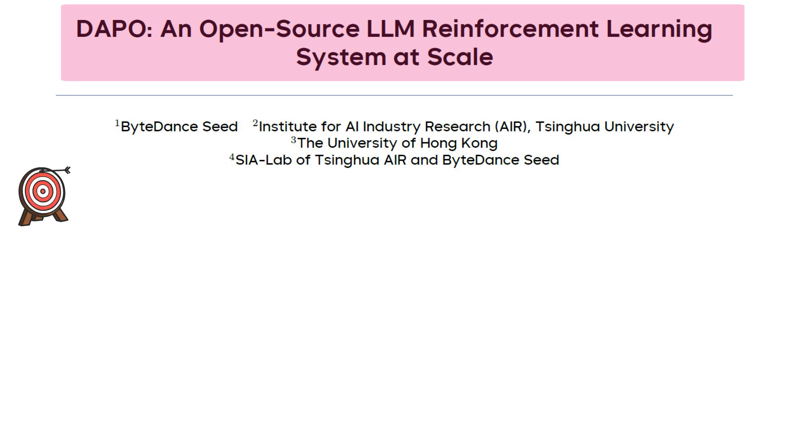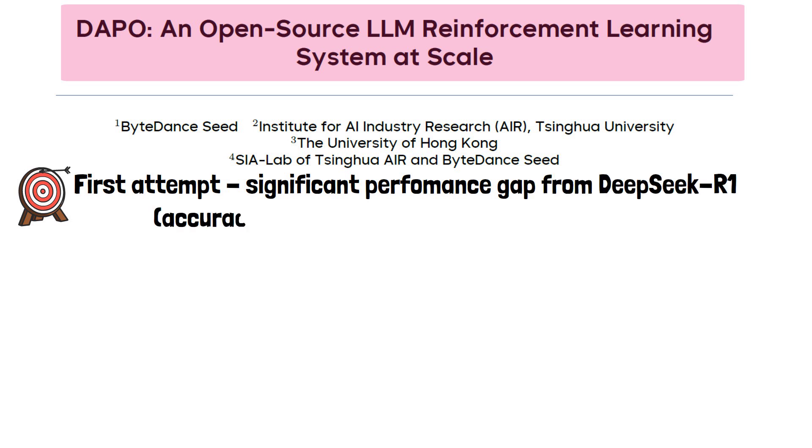When the researchers first attempted to replicate DeepSeek R1 results, they encountered a significant performance gap. Their initial run only achieved 30 points on the AIME 2024 benchmark compared to the 47 points achieved by DeepSeek R1.